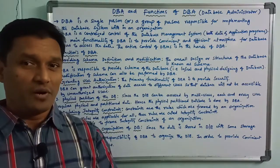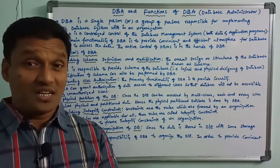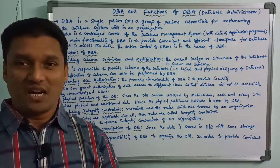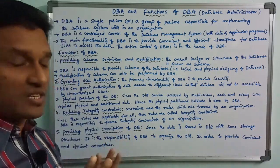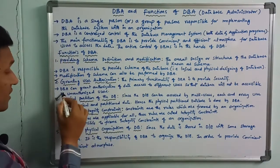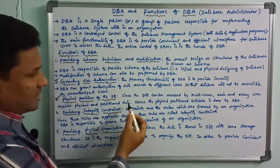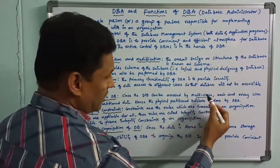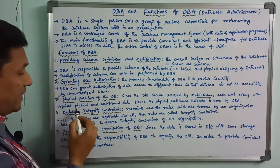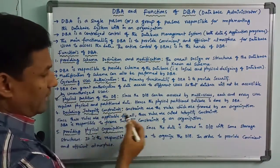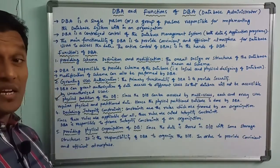Based on the user's password, the user has access to the database. Unauthorized users will not have access. The next function is the physical partition of the database. Since the database can be accessed by multiple users, each and every user requires physical and partitioned data. Hence, the physical partition of the database is done by DBA.